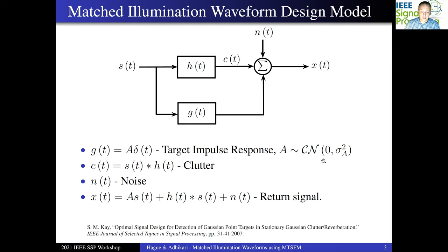The waveform also encounters some channel response h(t), and this produces our clutter signal c(t), the convolution of the impulse response of the channel and the transmit waveform. We will assume that this is also a complex normal process. We also have additive noise n(t), which we'll also assume is a Gaussian process. These three components sum up to produce our return signal x(t).